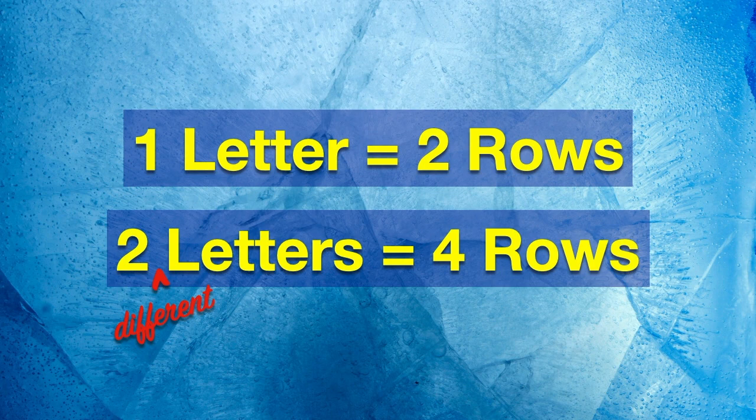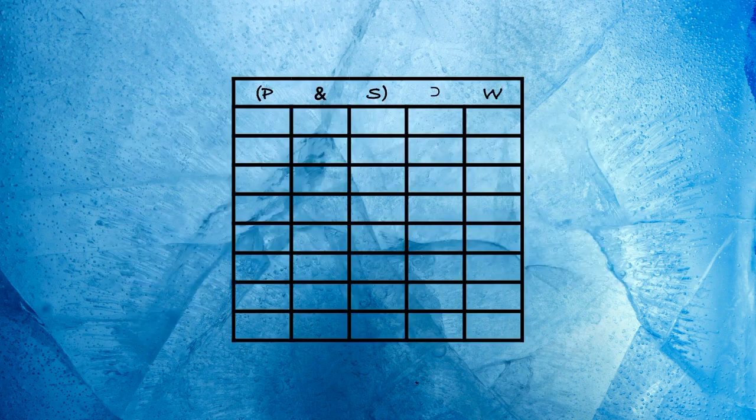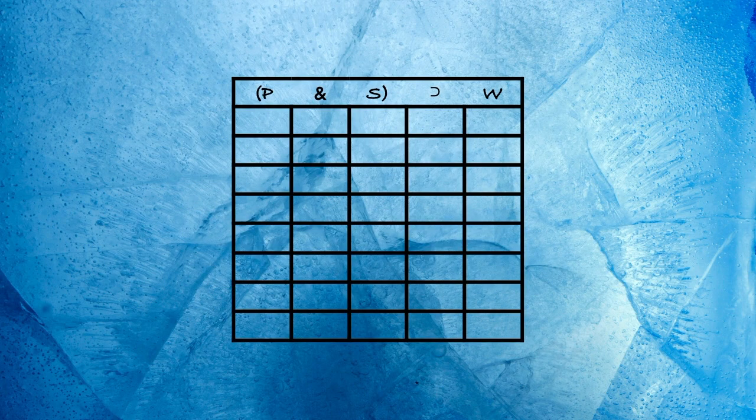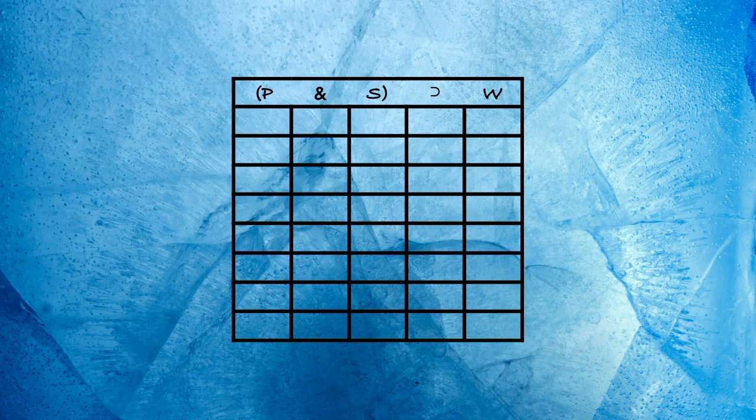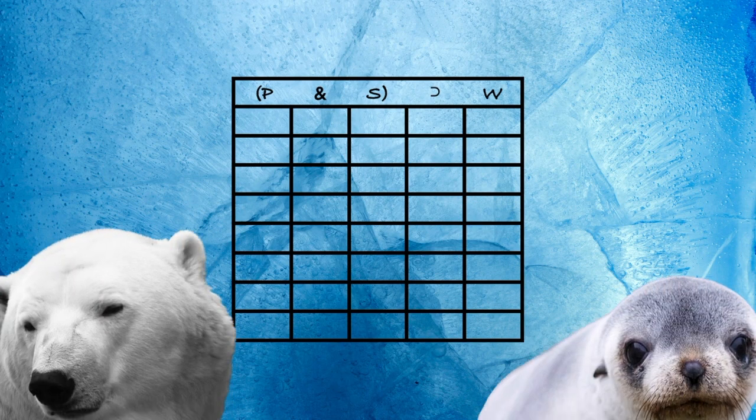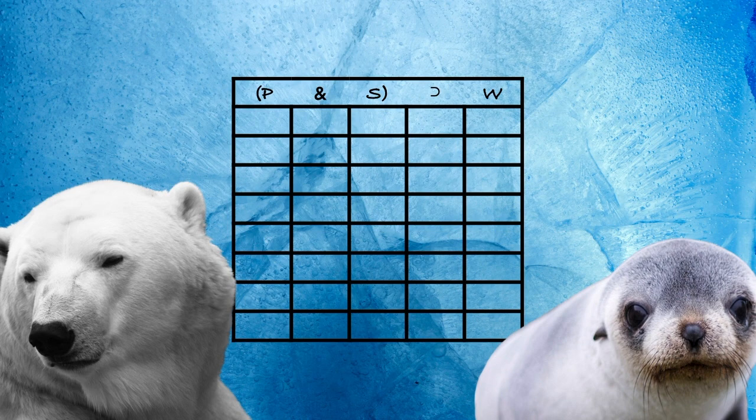Can you guess how many rows we'll need if there are three different letters? Well, let's find out. Here we have another conditional, but it's more complicated than the previous one. Maybe it says, if the polar bear hunts on ice and eats seals, then seals better watch out. And again, let's say we don't know the truth values of P or S or W.